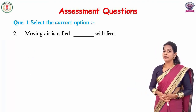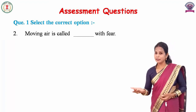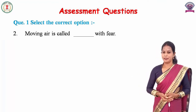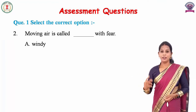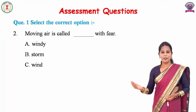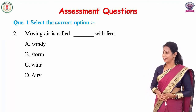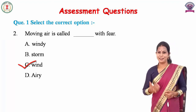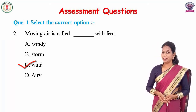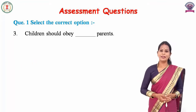'Moving air is called ___.' बहती हुई हवा को हम क्या कहते हैं? The options are A. Windy, B. Storm, C. Wind, D. Airy. And the correct answer is C — Wind. Moving air is called wind. बहती हुई हवा को हम wind कहते हैं.